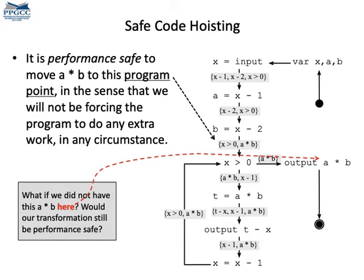But if A times B were not computed at the end of the program, performing the optimization, I mean moving the expression before the loop, would it still be performance safe? You can think about this question, and if you get stuck, just post it on the comment section on the video and I will answer it there.